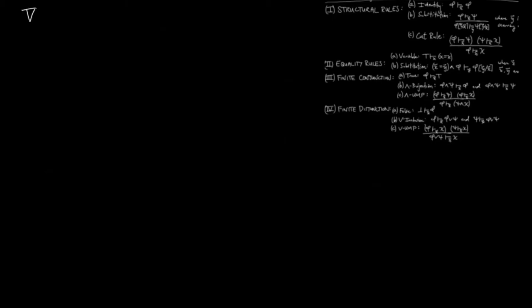Fifth, implication. We have that 'phi and psi entails chi in the context of x' is equivalent to 'psi entails phi implies chi in the context of x.' You can think of this as the exponential adjoint in a Cartesian closed category.